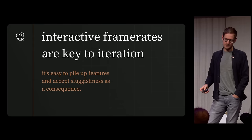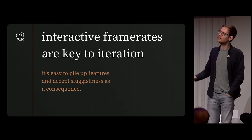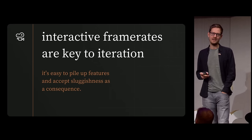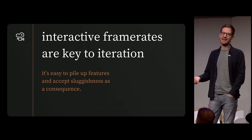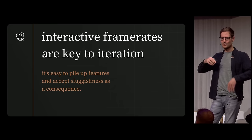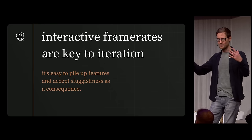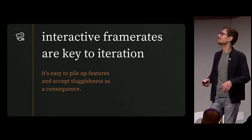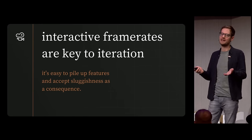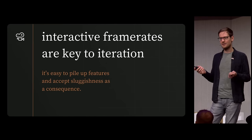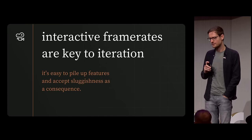And that would be my first takeaway: interactive frame rates are key to iteration. If you want to iterate on something, having it be really sluggish is really annoying. As you're building something more and more complex, it's really easy to accept, 'oh well, of course it's going to be kind of slow to adjust.' But it doesn't have to be. Don't optimize too early, but definitely optimize — it's worth it.